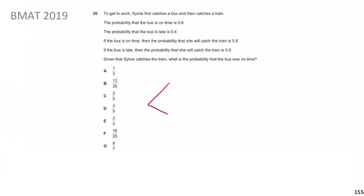The first event is she gets the bus — I'll call that B — or she doesn't, which I'll call B prime (meaning not B). Then after the bus comes the train: she either gets the train or not. The same branching applies on the late-bus branch too.